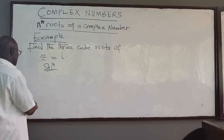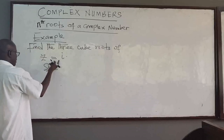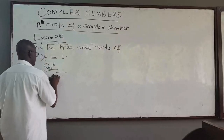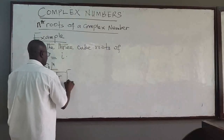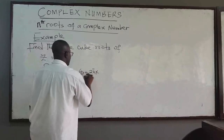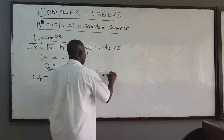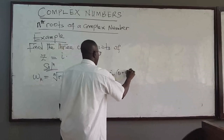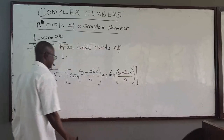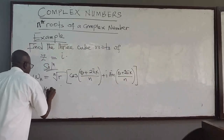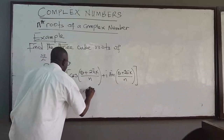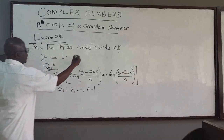Remember in the last lecture we showed that the nth roots of any complex number w is given by this formula. You want to find the nth root of z: this is cosine of (theta plus 2 pi k) over n, plus i sine of (theta plus 2 pi k) over n, where k is from 0, 1, 2, all the way to n minus 1.